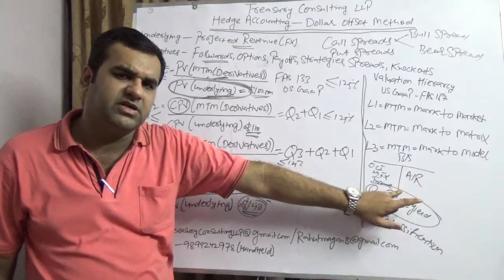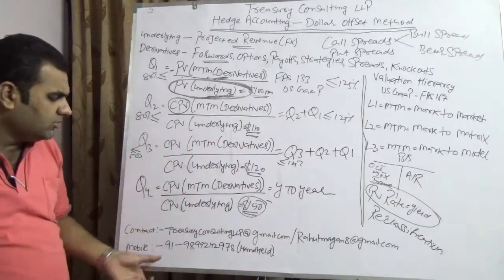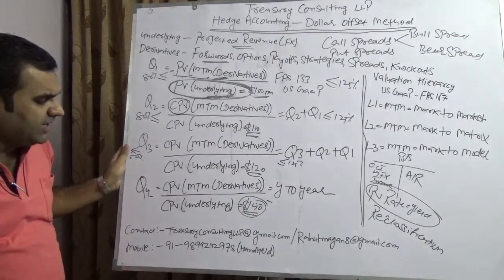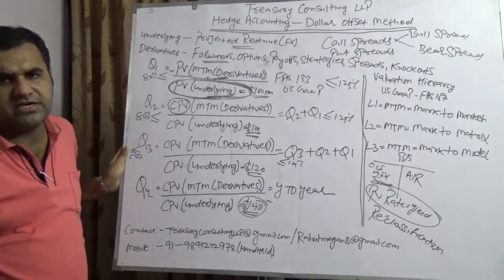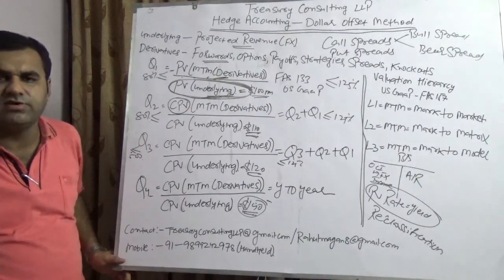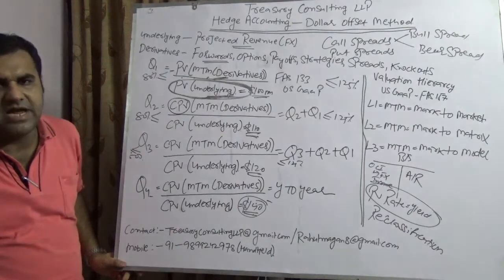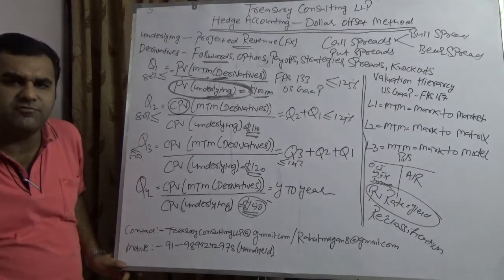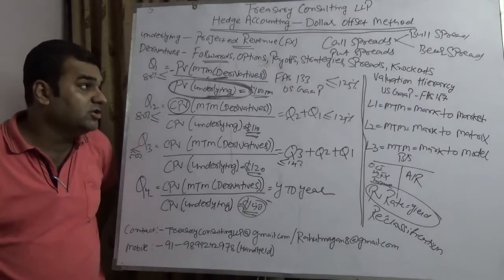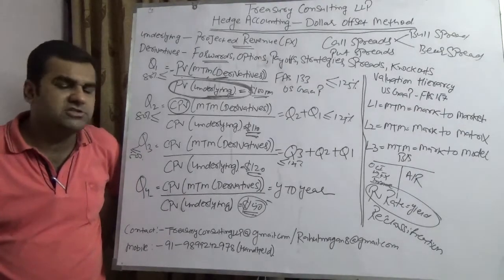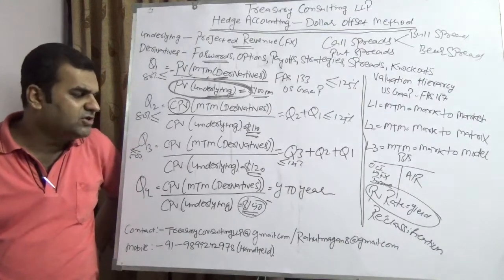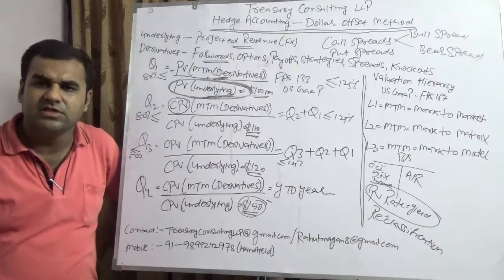All accountants watching this video should understand what has been explained. In case you have any doubt, you are welcome to contact us at treasuryconsultingllp@gmail.com or our alternate email rafalmagan8@gmail.com. Our mobile number is 9899242978. We are pleased to share an international collaboration with a Singapore-based research firm, WBA — World Wide Business Research — where we are acting as their media partner. They are coming up with a conference in November 2016 in Singapore for three days on foreign exchange, where I will personally attend. All viewers can get more details on our YouTube or LinkedIn channel and receive a discount of approximately 15 to 25%.